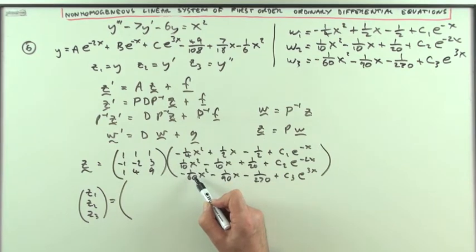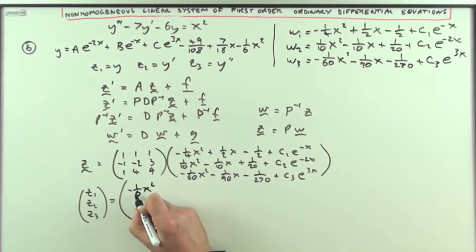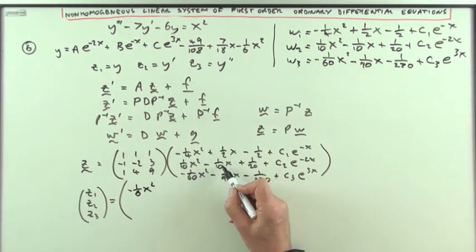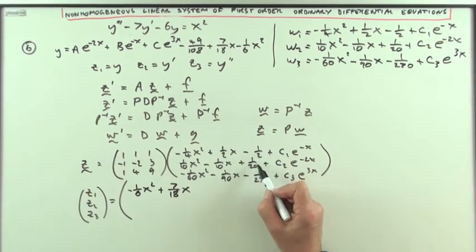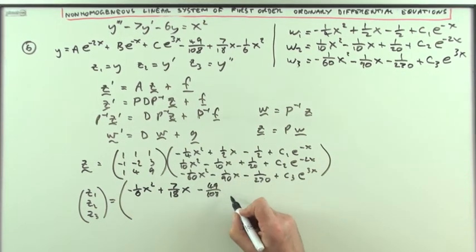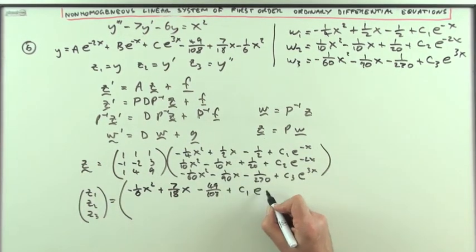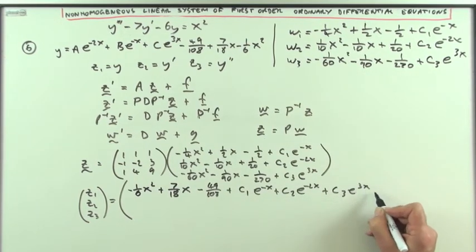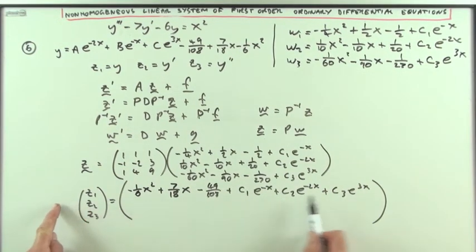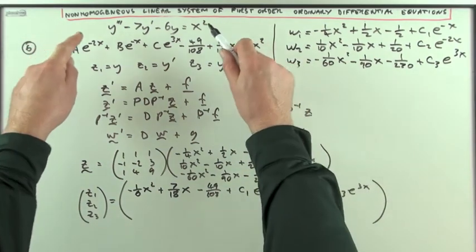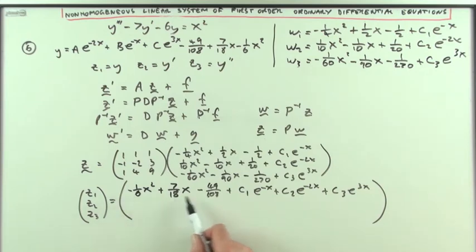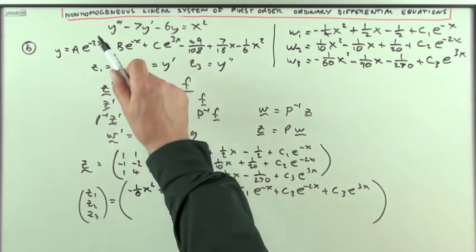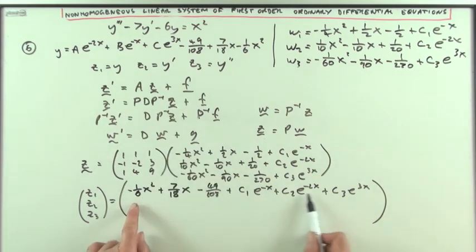So one of those, one of those, one of those. I'll do it term by term, so for x squared I'd have negative a quarter plus a tenth minus a sixteenth, which adds up to negative a sixth. For x, one of them, one of them: a half minus a tenth minus a ninetieth is seven eighteenths. One of them, one of them: negative a half plus a twentieth minus one two seventieth is minus 49 over 108. And then one of them, one of them is plus c₁e⁻ˣ plus c₂e⁻²ˣ plus c₃e³ˣ. Now that's z₁.